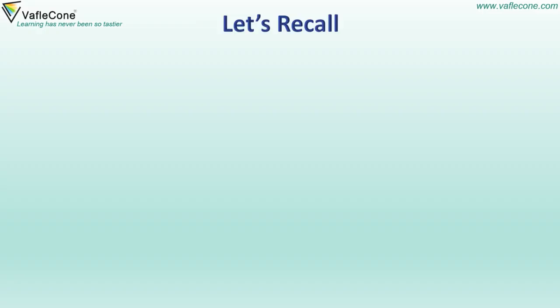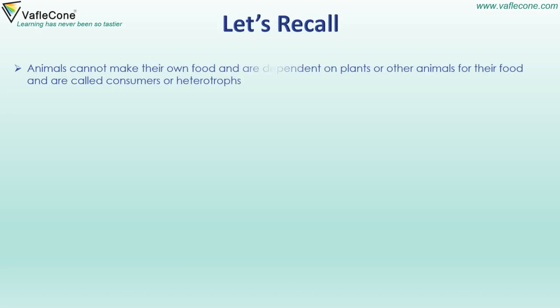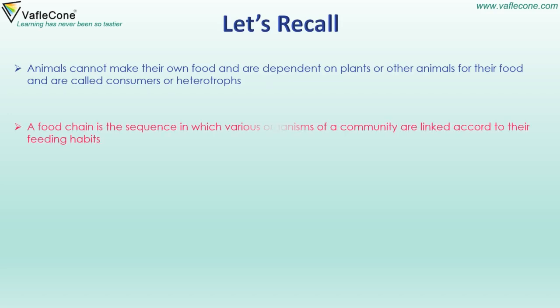Let's recall: Animals cannot make their own food and are dependent on plants or other animals for their food, and are called consumers or heterotrophs. A food chain is the sequence in which various organisms of a community are linked according to their feeding habits.